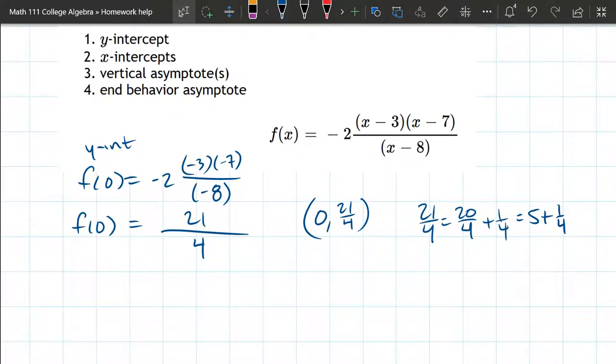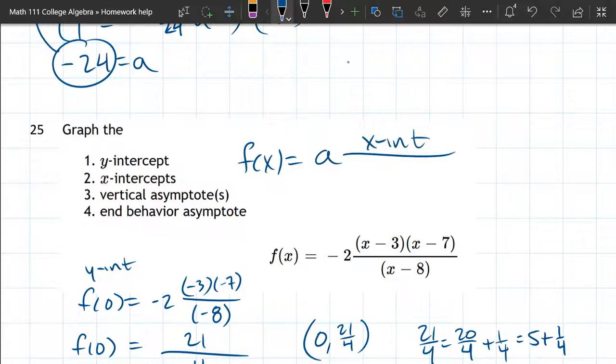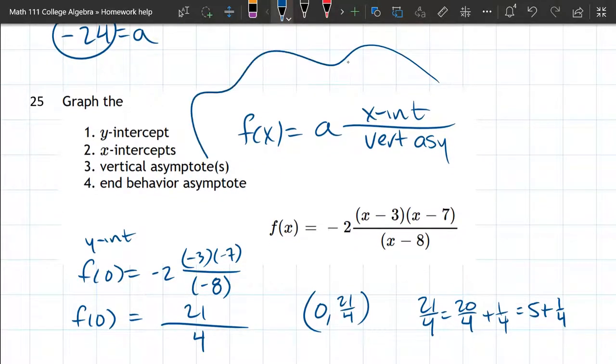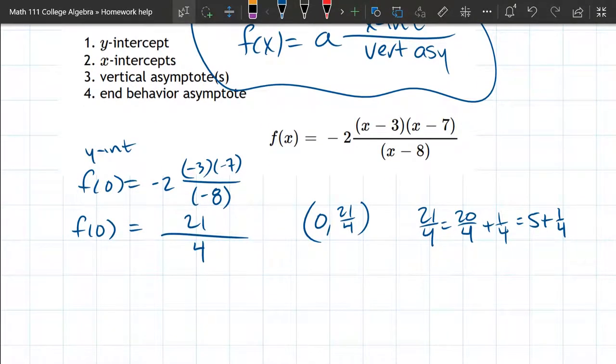All right, x-intercepts. Those are actually really fast to see. And if I just write the generic rational function, you have a times, you can see the x-intercepts as factors and the vertical asymptotes as factors. So this is super important to remember right here.